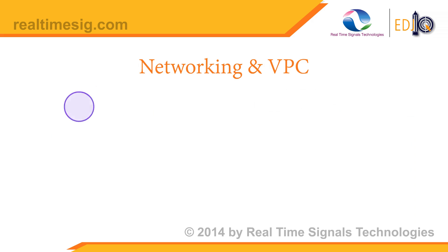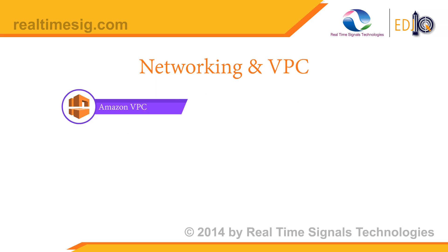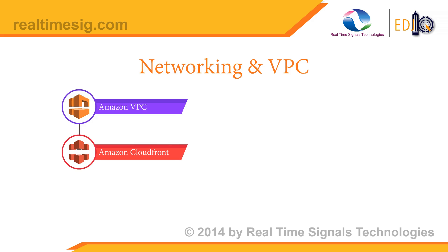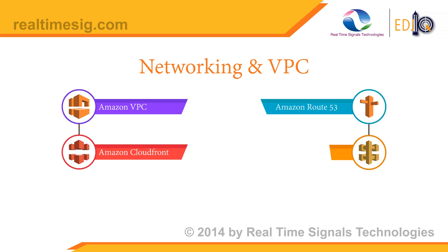Networking: VPC stands for Amazon Virtual Private Cloud — think of it as a virtual data center. CloudFront is Amazon's content delivery network for remote users. Route 53 is Amazon's DNS service, used to convert names to IP addresses and vice versa. Amazon API Gateway is a fully managed service that makes it easy for developers to create, publish, maintain, monitor, and secure APIs at any scale, acting as a front door for applications to access data, business logic, or functionality from backend services.